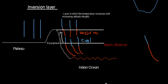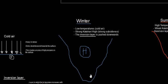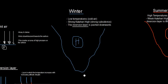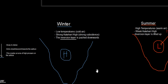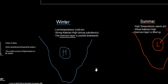Let's look at winter first — how does the inversion layer help explain how the Kalahari High influences South Africa's seasonal weather? During winter, we have cold air, and the Kalahari is strong because there is strong subsidence. Cold air presses against the surface, exerting high pressure, and this is how an area of high pressure is created.